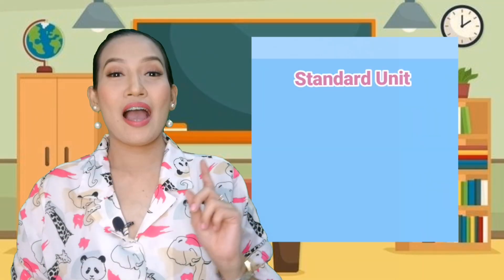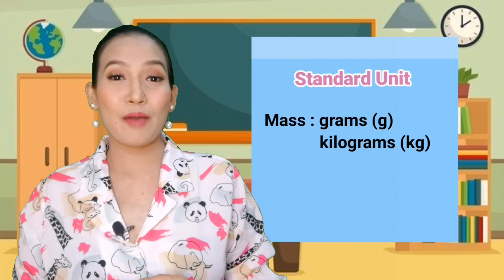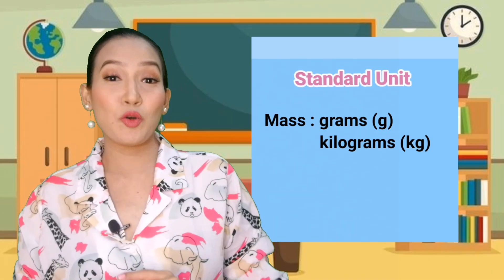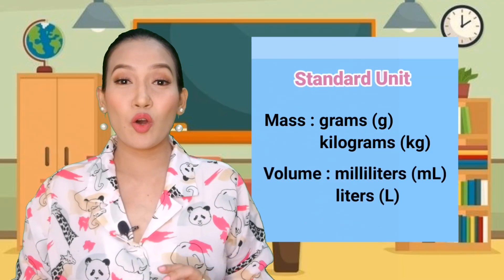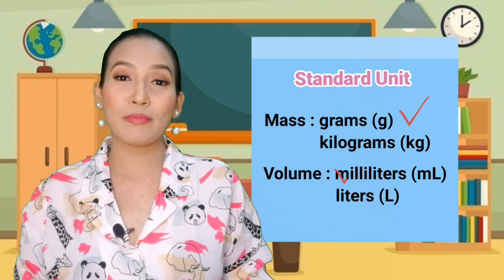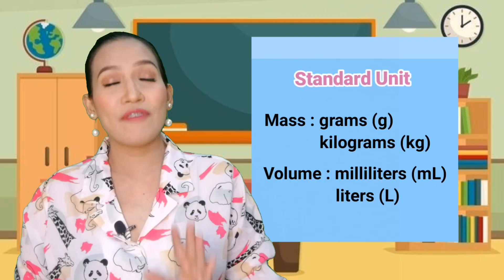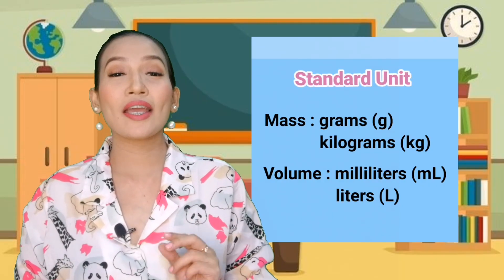For example, if the problem gives the value of the solute in ml and the solution in liters, you need to convert liters to ml before solving the problem so you can cancel units. The units of solute, solvent, or solution must be the same when getting percent by mass or percent by volume. The standard unit of mass in the metric system is grams or kilograms, so we use grams for percent by mass. For liquid volume, we use ml or liters, but we commonly use grams and milliliters since only very small amounts are needed.